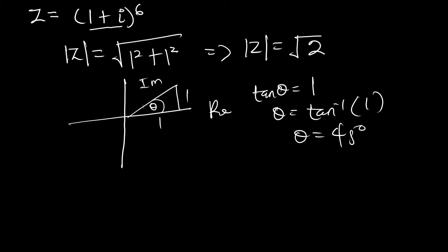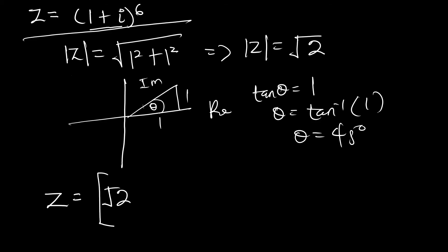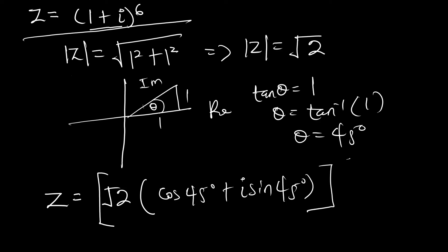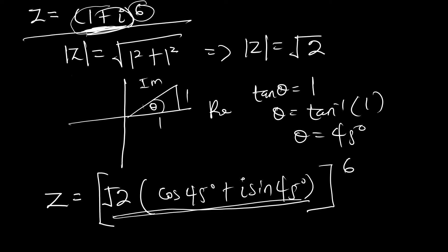So the polar form is z = √2 × (cos 45° + i sin 45°), all to the power of 6. This is because the whole expression equals (1 + i) in polar form, and the power of 6 is still applied. We've basically converted it from Cartesian form to polar form without changing anything else.